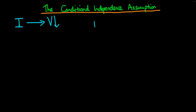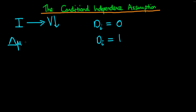We spoke about in the last few videos how if the level of infrastructure spending which a region receives is randomly assigned — so independent of that particular area's characteristics — where DI equals 0 for some states and DI equals 1 for others, then in that situation we know that the simple difference of means, delta mu, actually evaluates to the average causal effect.